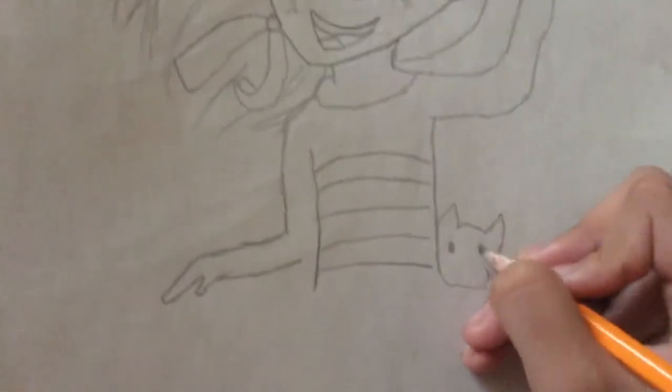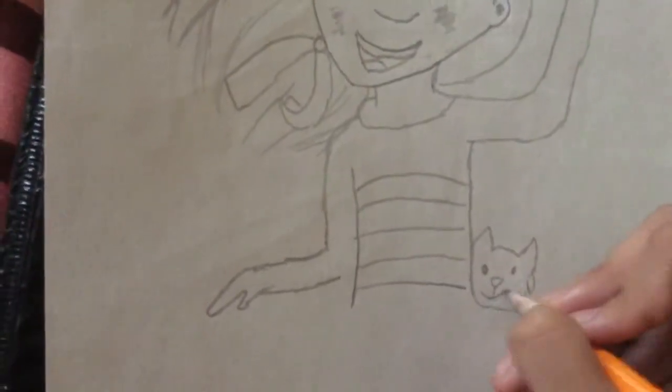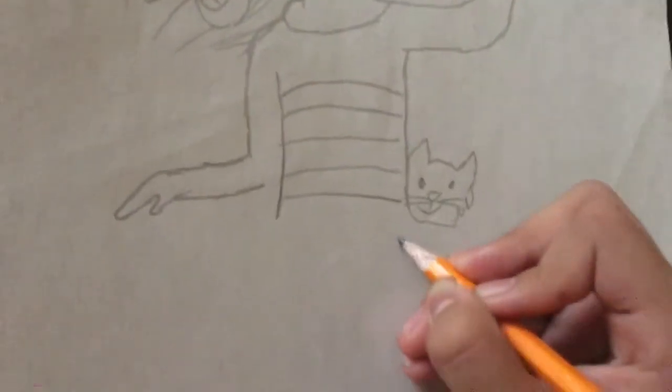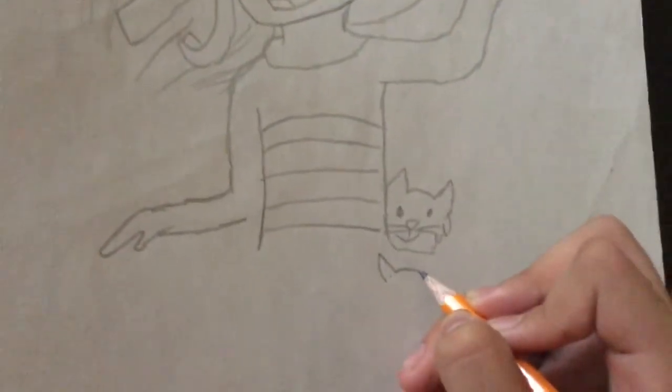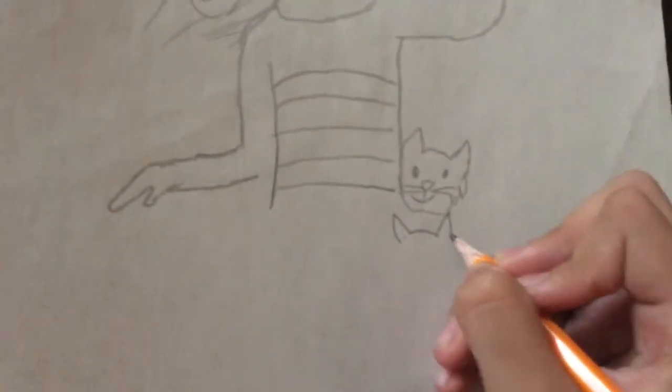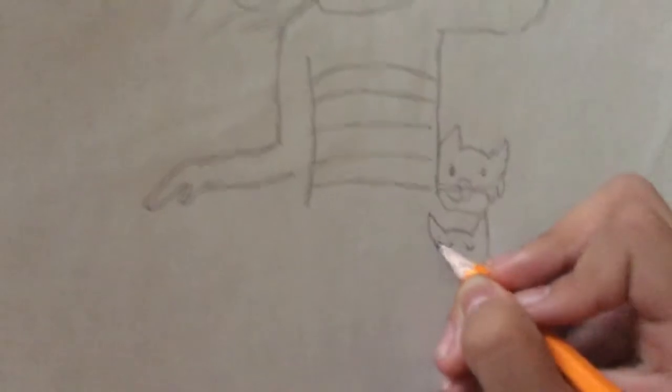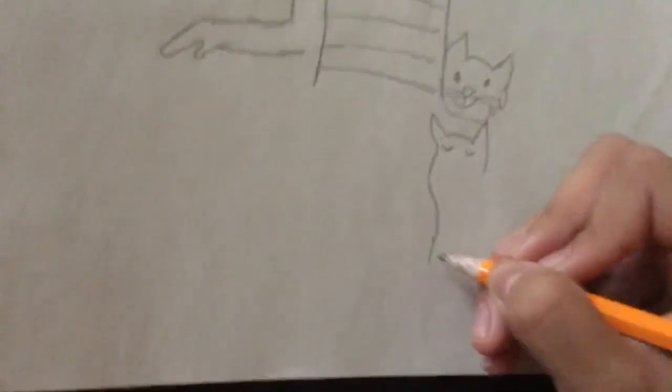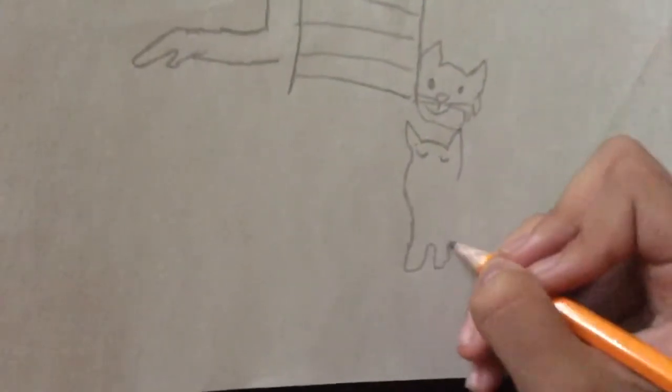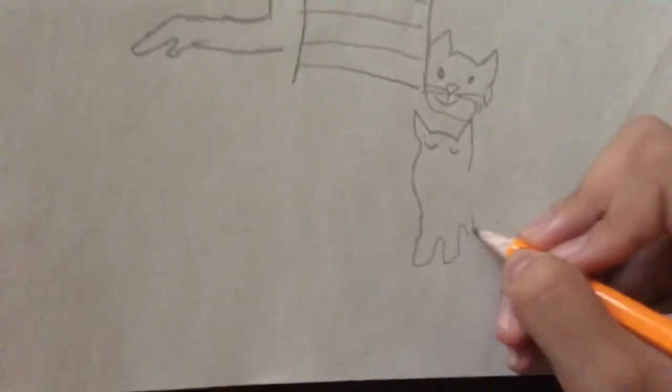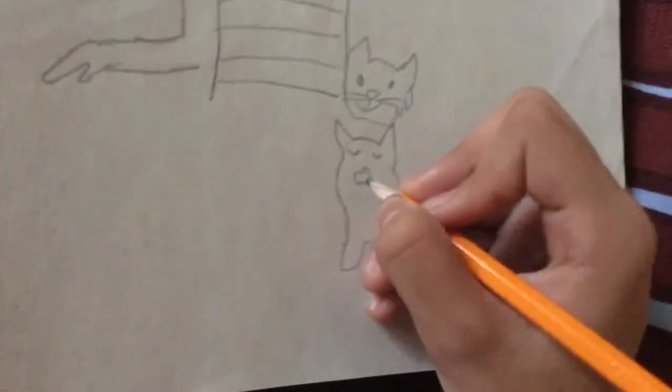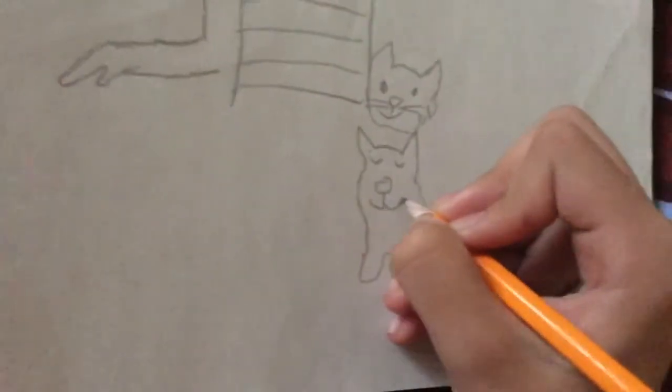Then draw the eyes, the nose, a smile, the whiskers right there. Then there's another cat right here and right here. And the eyes, she's like sleeping. And there you go. And yeah, the other legs are at the back.